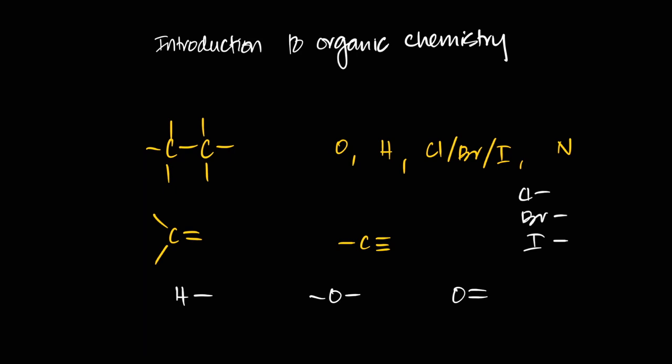Before we continue, I have to mention the term functional group. A functional group refers to the atom or group of atoms responsible for certain properties of a class of compounds. For example, in alcohols you see the OH group — it's bonded to a carbon atom and gives alcohols their characteristic properties. If you have a C double bond O with an OH, that's another functional group representing a carboxylic acid. Functional groups are simply atoms or groups of atoms that have certain properties.